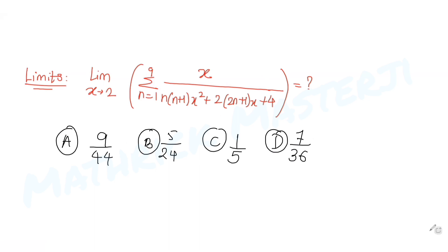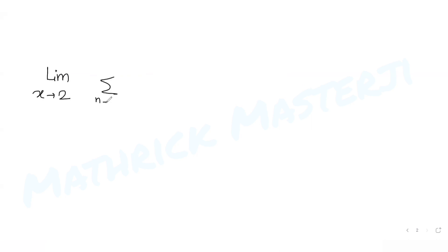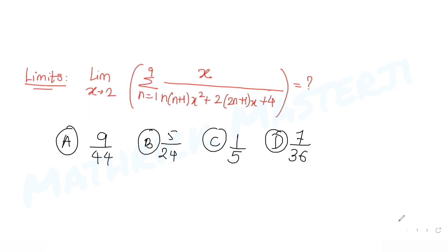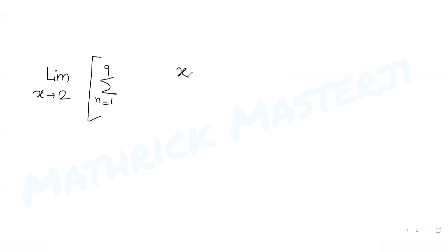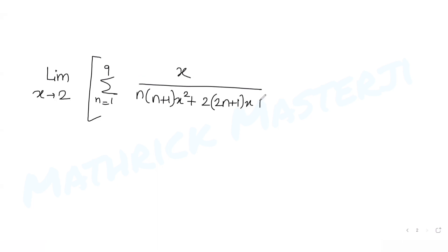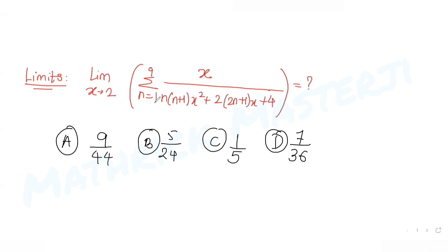Let's solve this. We write: limit x tends to 2, summation n equals 1 to 9, of x over n(n+1)x² + 2(2n+1)x + 4. That is the whole expression.